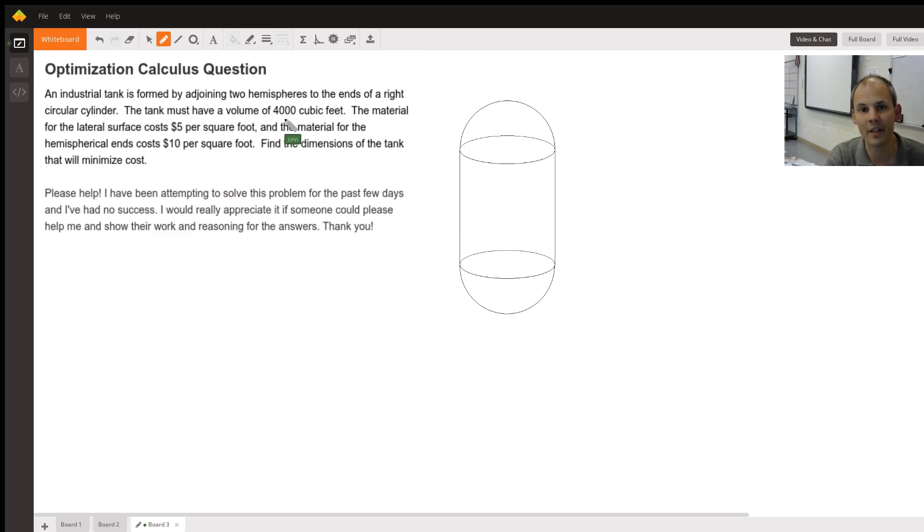Now, another constraint is that it has to be 4,000 cubic feet, which is good that we have that constraint because that makes it to where we can get it into one variable only, and then we can take a derivative, find out where that minimizes, and figure out exactly what R and H all have to be, and also what the cost in the end is going to be that is minimized.